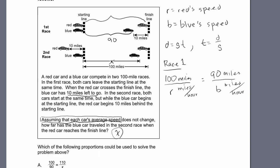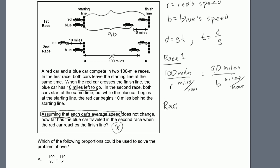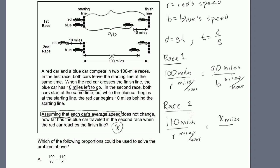What does the second race tell us? Using the same logic for race two: in the time it takes the red car to travel 110 miles — he drives the whole 100 miles but started 10 miles back — so 110 miles divided by r (miles per hour) equals x miles divided by b (miles per hour), where x is the distance the blue car travels.